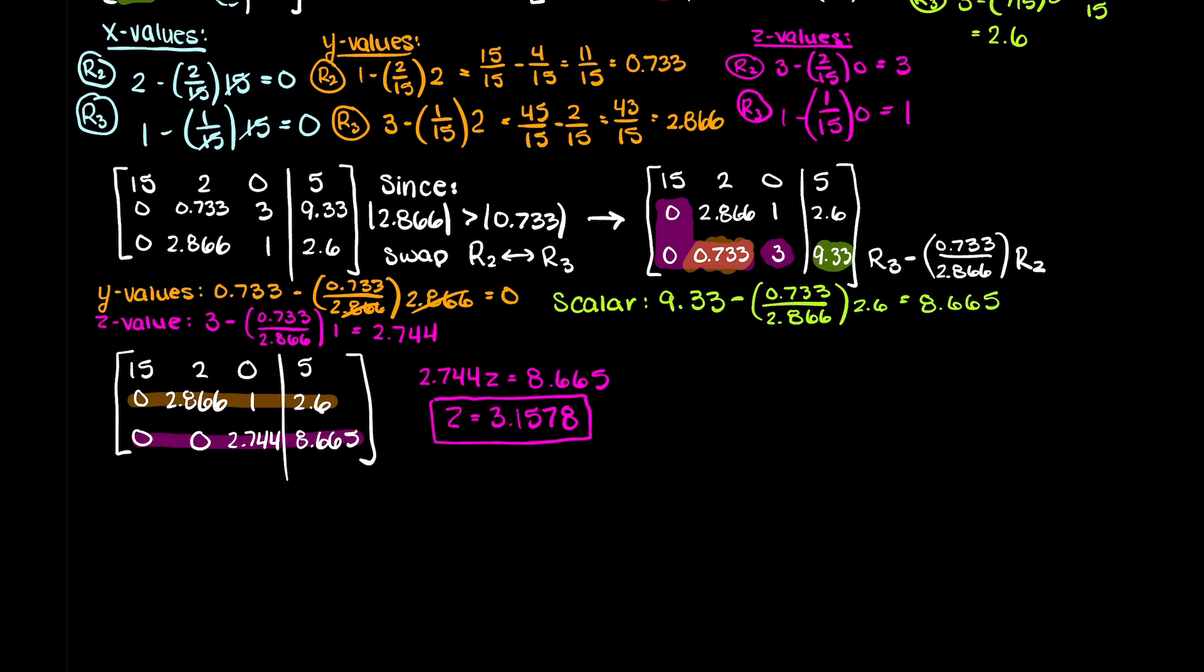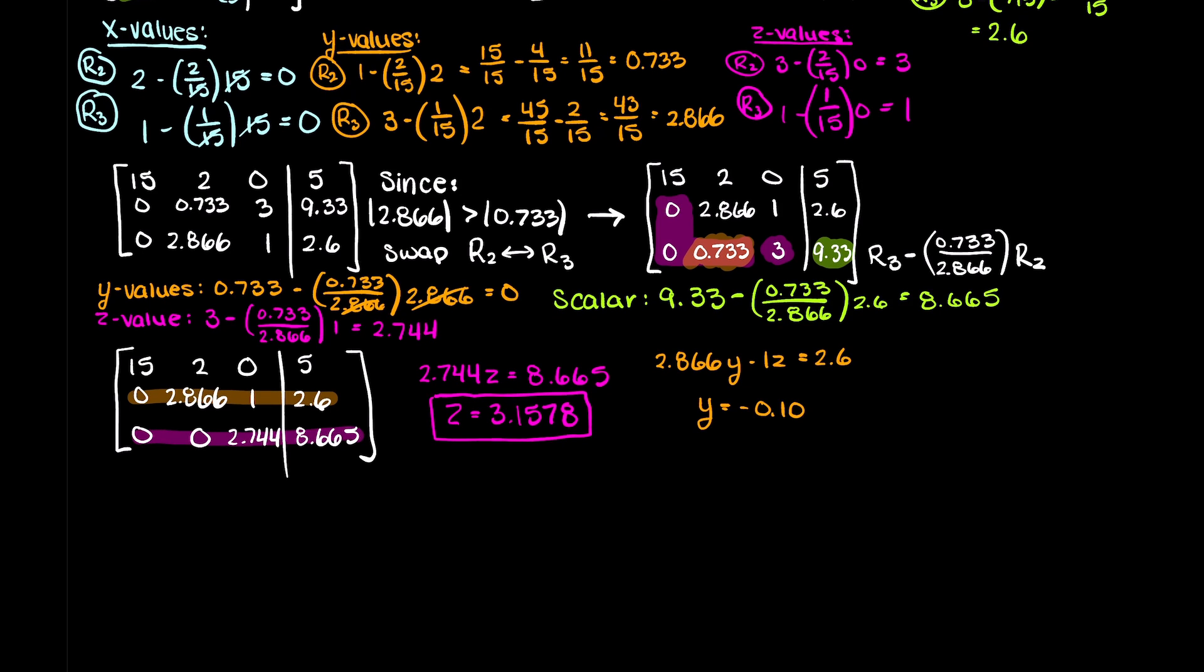Then, using z, we can plug it into equation 2 and solve for y. y is equal to minus 0.1018. And lastly, using y and z, we can solve for our first equation here, which is x, which works out to 0.3469.